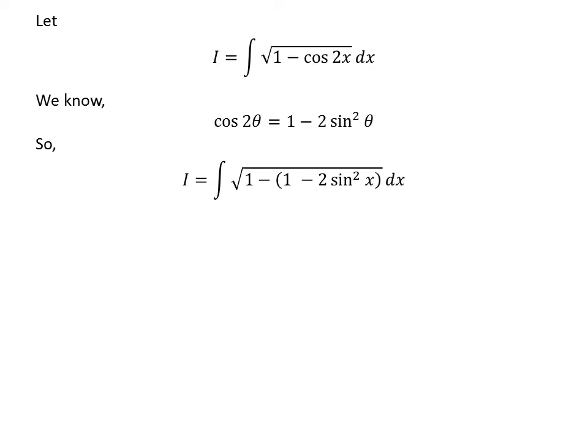So, I replaced cosine of 2 times x in the above integrand with 1 minus 2 times square of sine of x. Removing brackets gives us I equals integral of square root of 1 minus 1 plus 2 times square of sine of x.